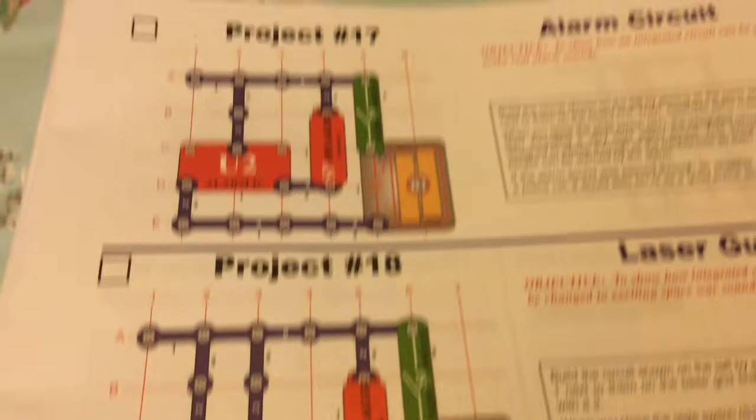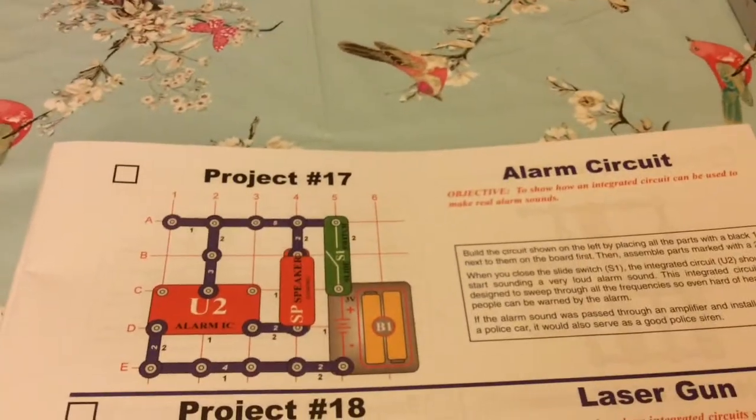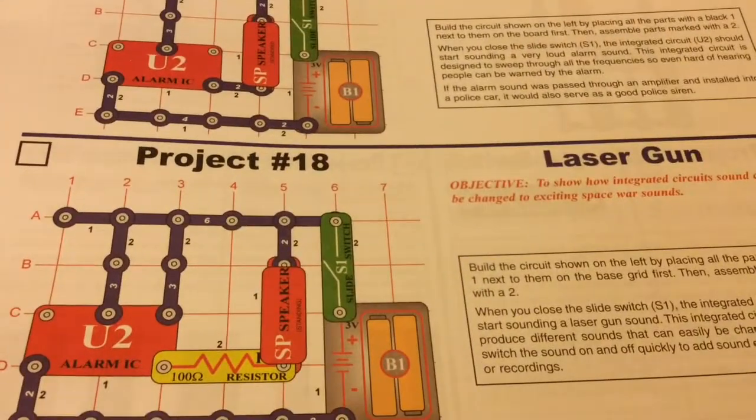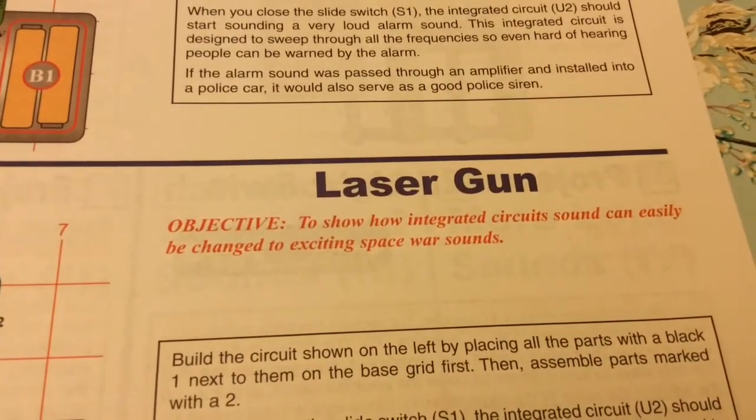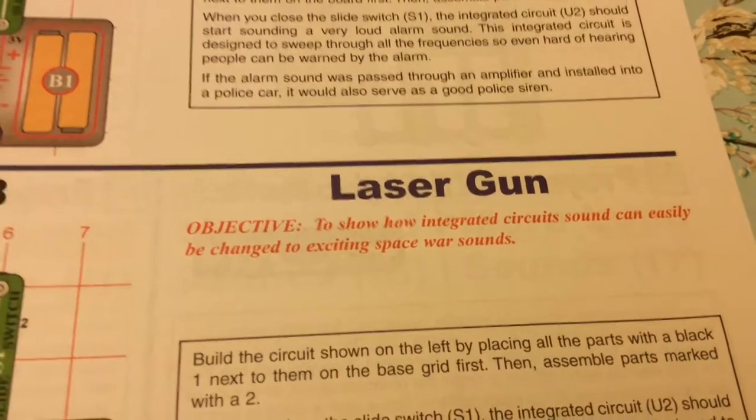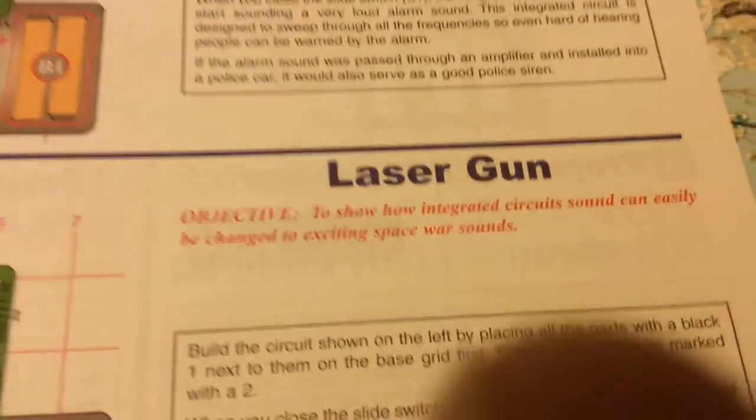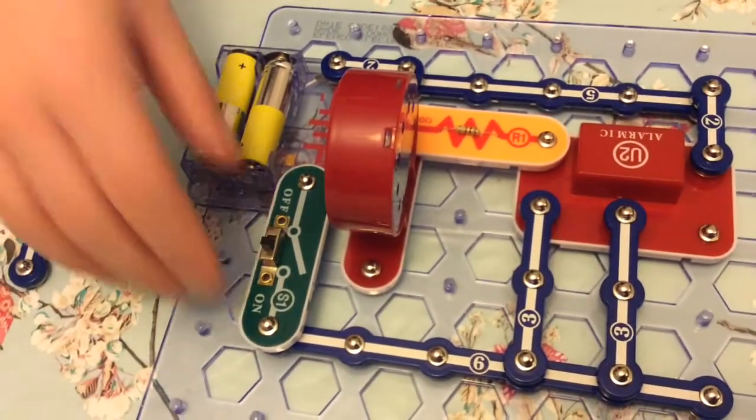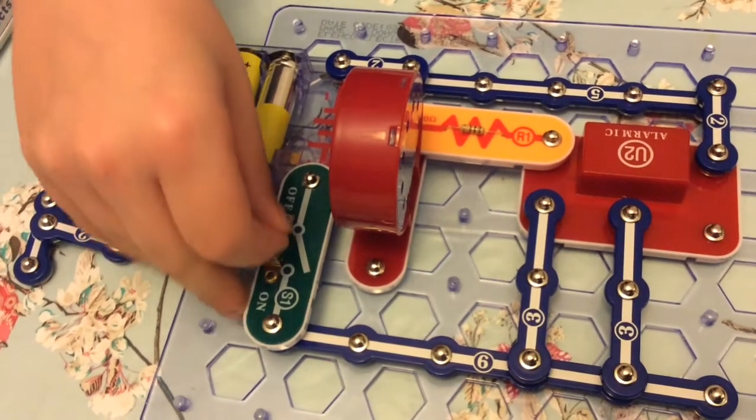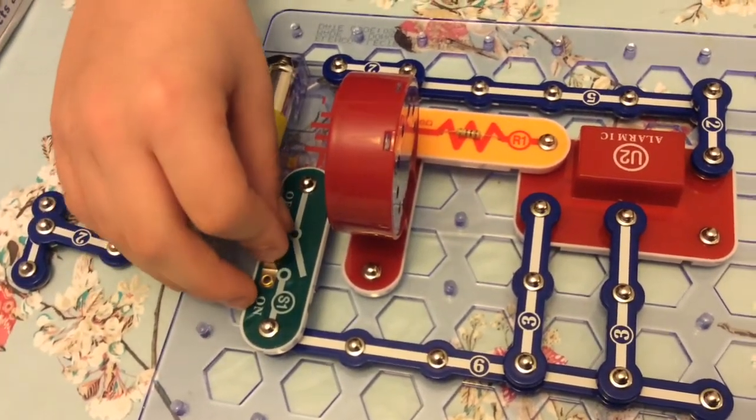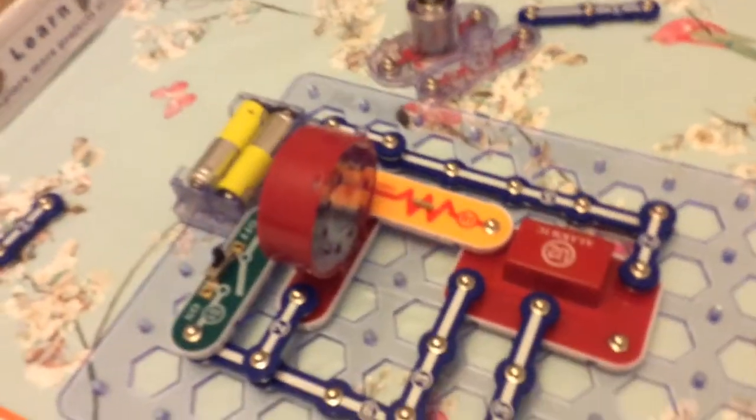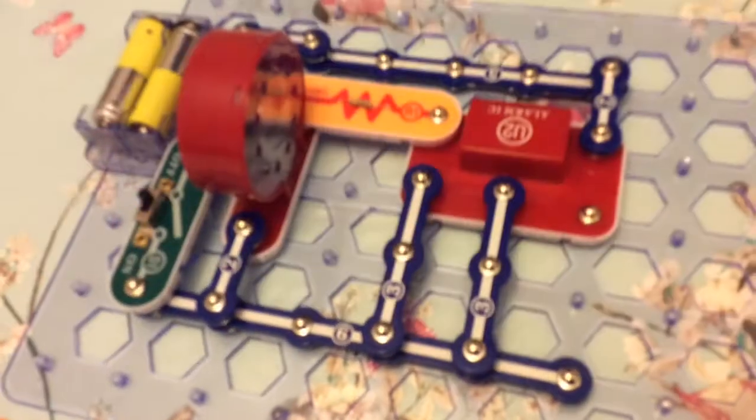Okay, so there's Project 17. And modified is Project 18, and this is to show how integrated circuit sound can easily be changed to exciting space war sound. Oh, it's going to be exciting. Let's have a look. Go. Uh-huh. Well you can't hear anything in space because there's no air. Back to the drawing board. We got it a bit wrong, we missed out the two here, but it does sound different.